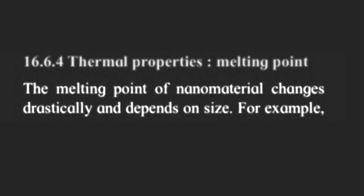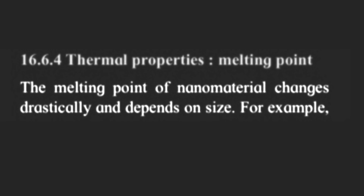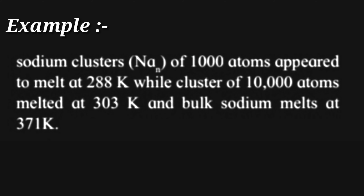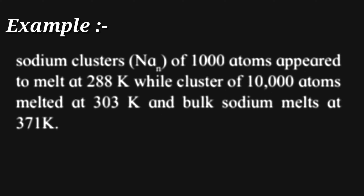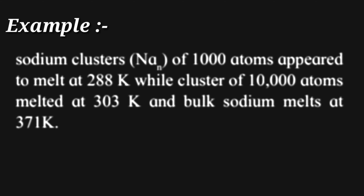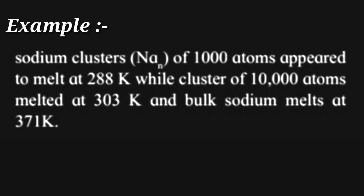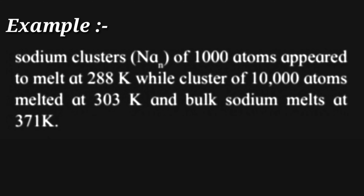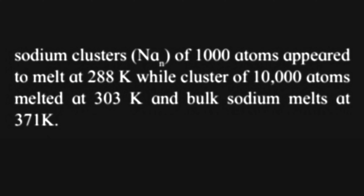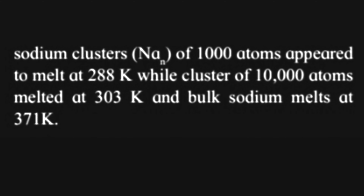Then next are thermal properties, that is melting point. The melting point of nanomaterial changes drastically and depends on size. For example, a sodium cluster of 1000 atoms appears to melt at 288 Kelvin — sodium ka ek cluster 1000 atoms se bana hua 288 Kelvin pe melt hota hai. While a cluster of 10,000 atoms melts at 303 Kelvin — jaise atoms ka number bada, waise uska melting point bhi increase hua. And bulk sodium melts at 371 Kelvin.